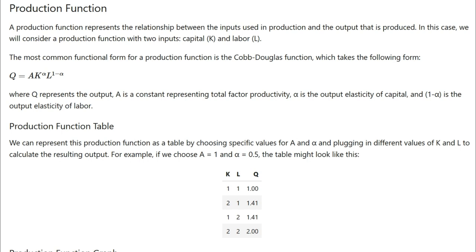In this case, the Cobb-Douglas function is used to calculate the output with the specific values of A equals 1 and alpha equals 0.5.